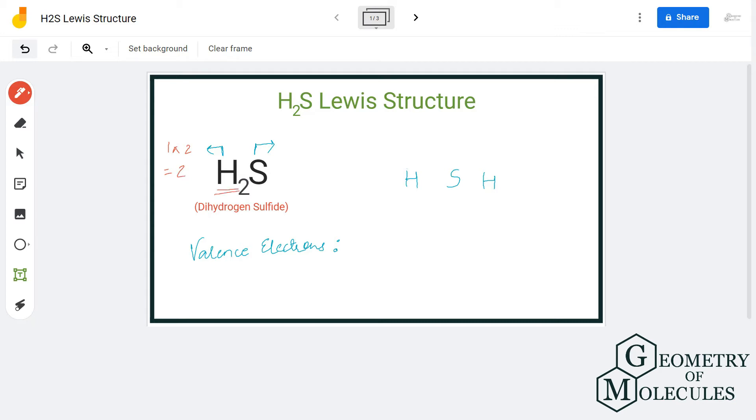Similarly, sulfur is a group six element and has six valence electrons in its outer shell. So the total number of valence electrons for dihydrogen sulfide will be eight. Now let's start putting atoms and their valence electrons to draw the Lewis structure of this molecule.